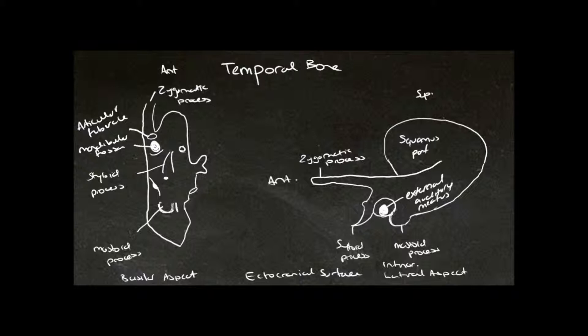Directly behind we have the petrotympanic fissure, and this transmits the chorda tympani, which is a branch of the facial nerve. Then we have our styloid process, and behind the styloid process we have the stylomastoid foramen.